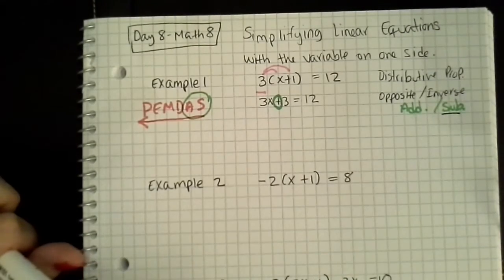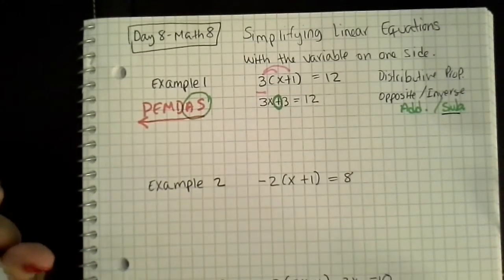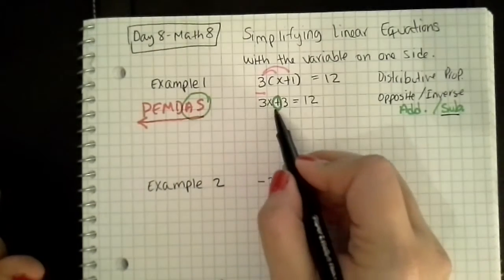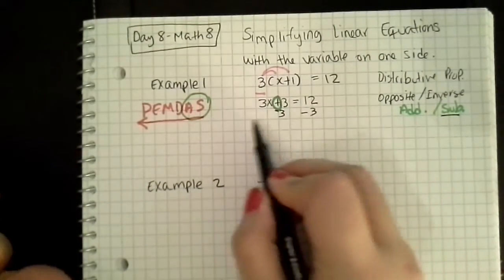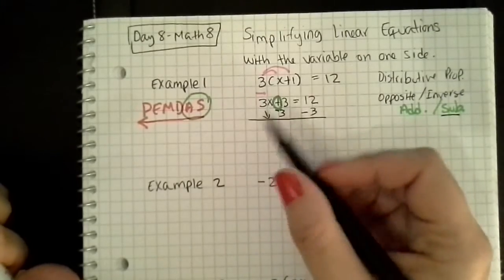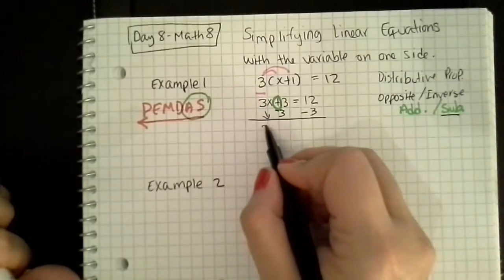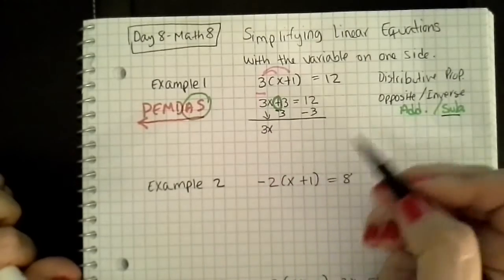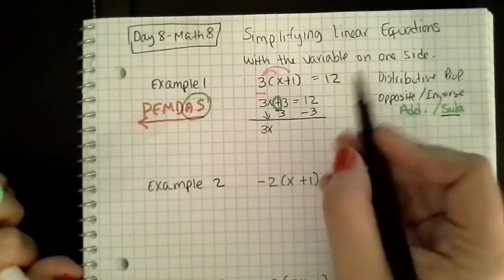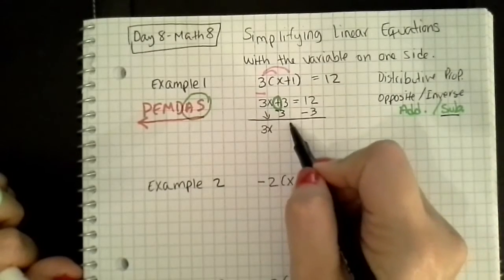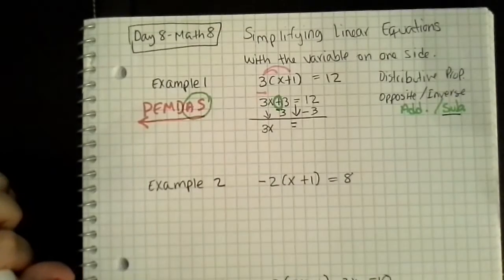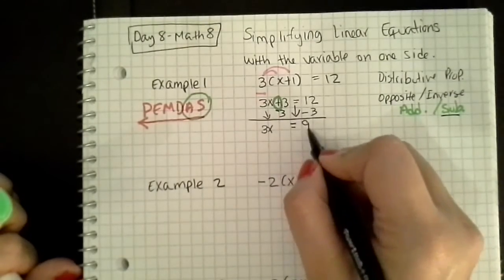So that's what I'm going to use to be able to do the next following step. So I subtract 3 from both sides. Bring the 3x down because I didn't do anything to it. 3 minus 3 is just 0. I can either write plus 0 or not write anything at all — I choose not to write anything at all. And 12 minus 3 is 9.